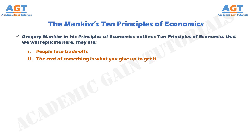Principle No. 3: Rational people think at the margin. Decisions in life are rarely black and white but usually involve shades of grey. When it's time for dinner, the decision you face is not between fasting or eating meat, but whether to take that extra spoonful of mashed potatoes. When exams roll around, your decision is not between blowing them off or studying 24 hours a day, but whether to spend an extra hour reviewing your notes instead of watching TV. Economists use the term marginal changes to describe small incremental adjustments to an existing plan of action. Marginal changes are adjustments around the edges of what you are doing. A rational decision maker takes an action if and only if the marginal benefit of the action exceeds the marginal cost.